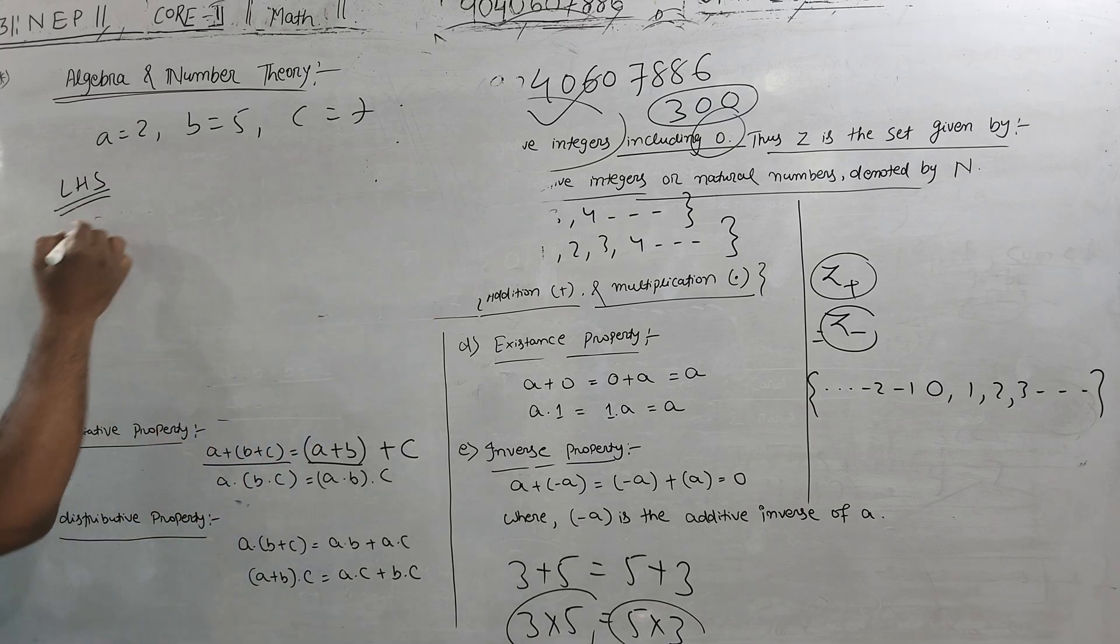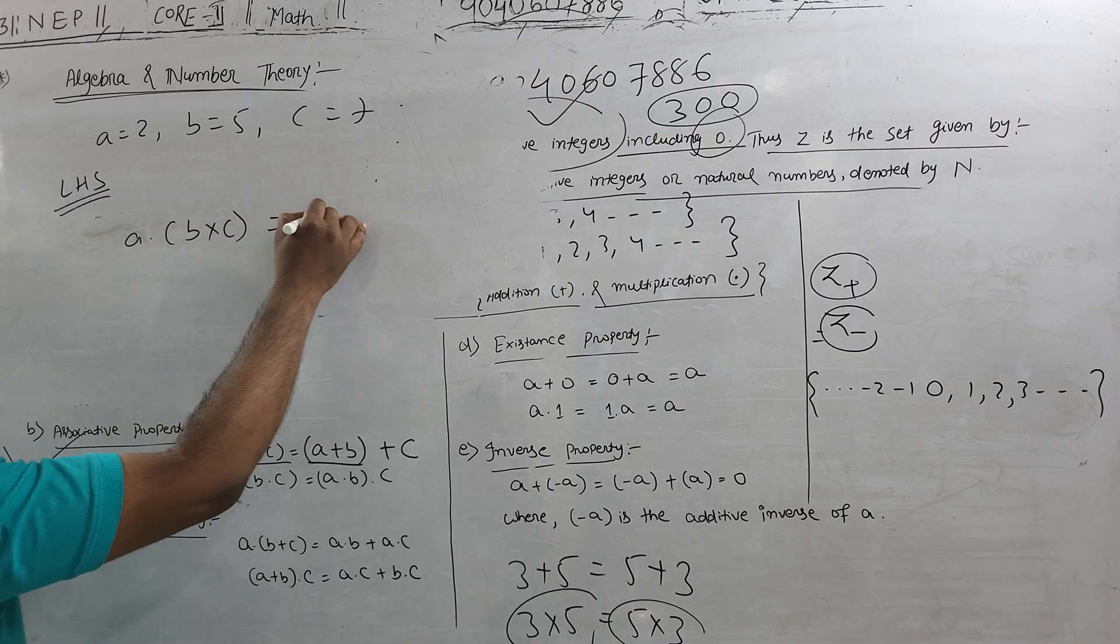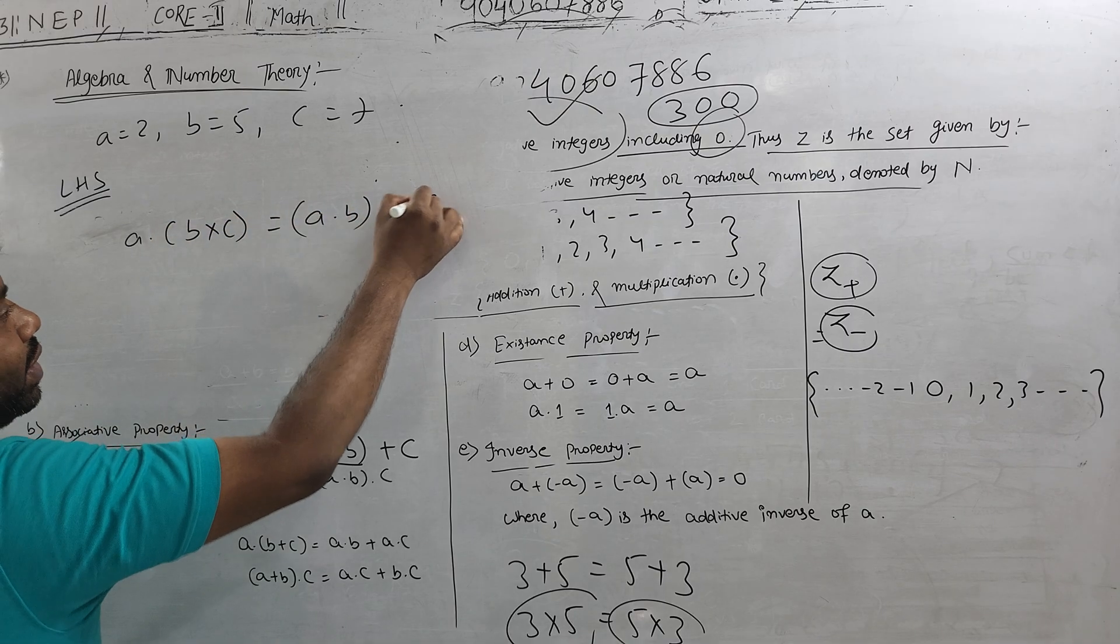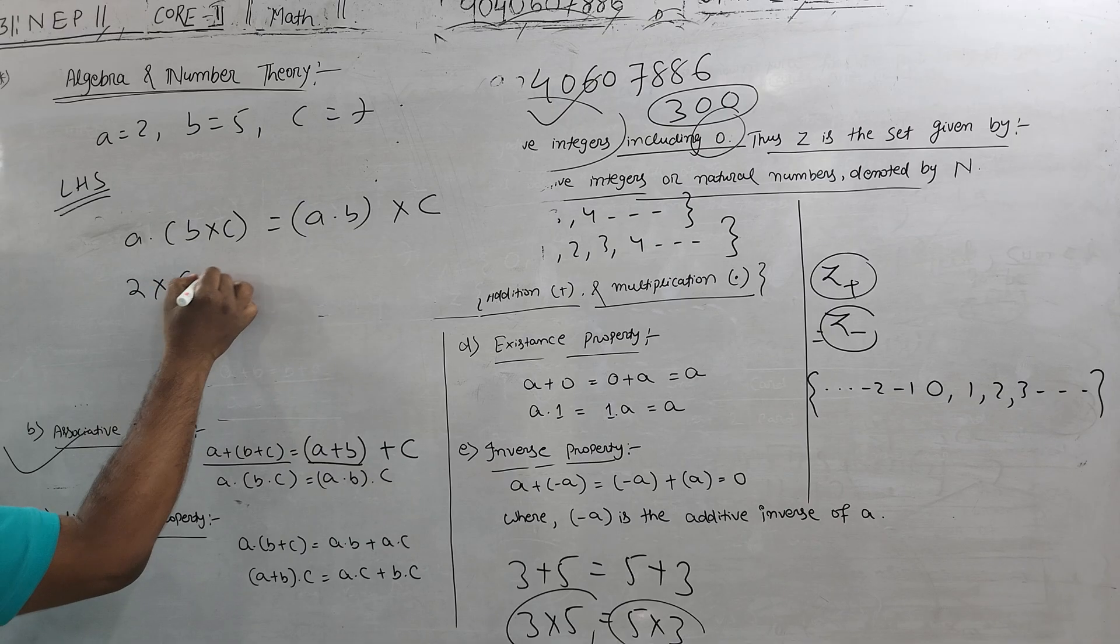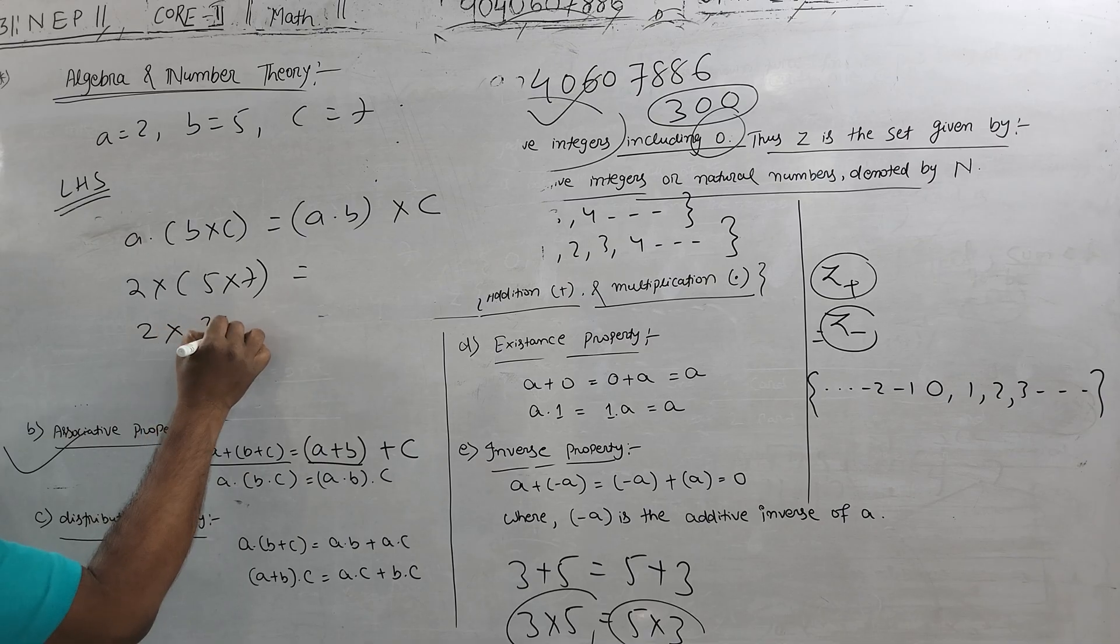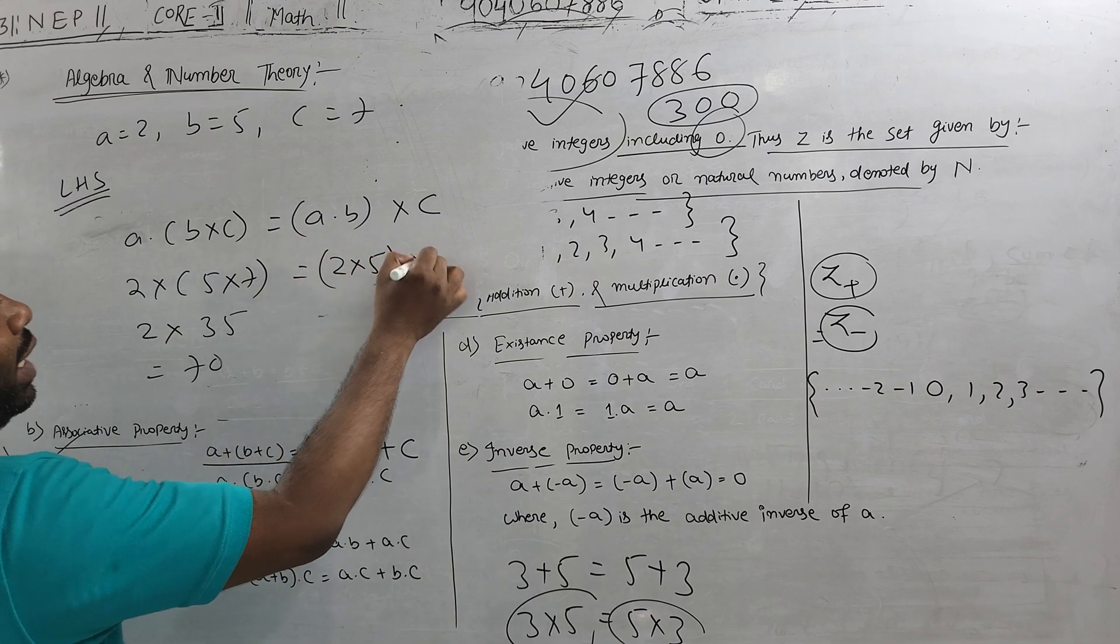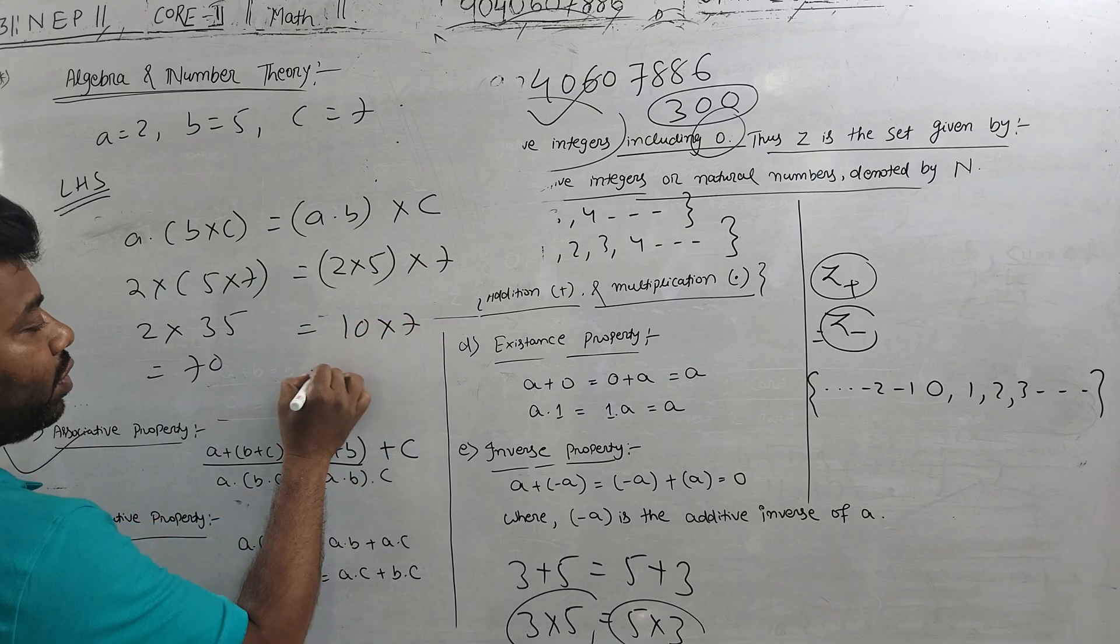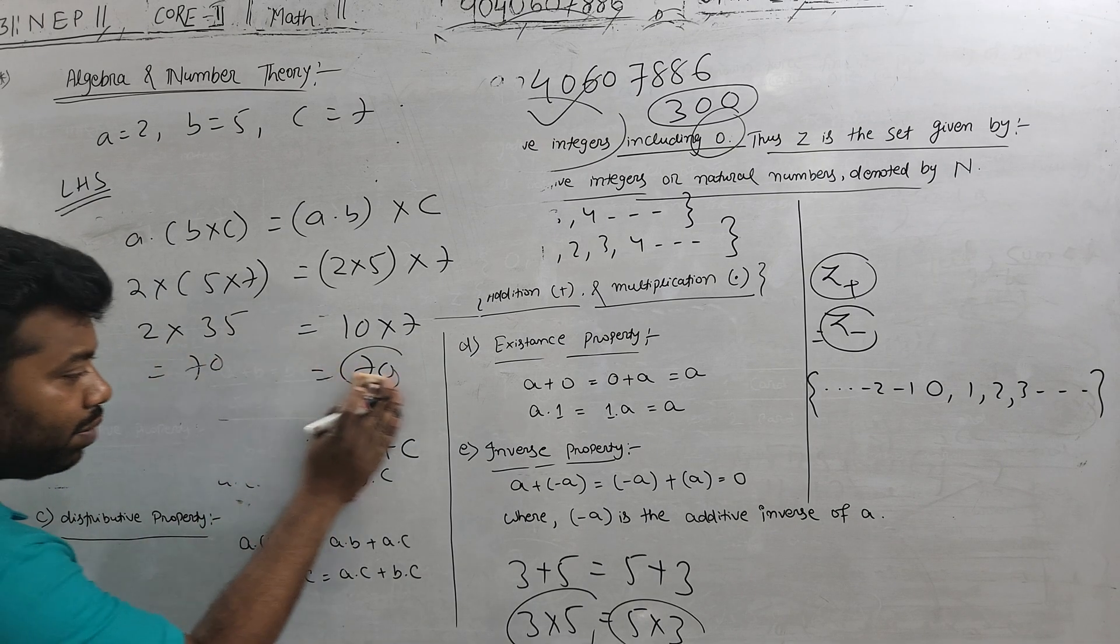Same thing for multiplication: a into b into c is equal to a into b into c. So 2 into 5 into 7. 2 into 7 first, then multiply by 5. Or 2 into 5, then into 7. The second property satisfies the associative property.